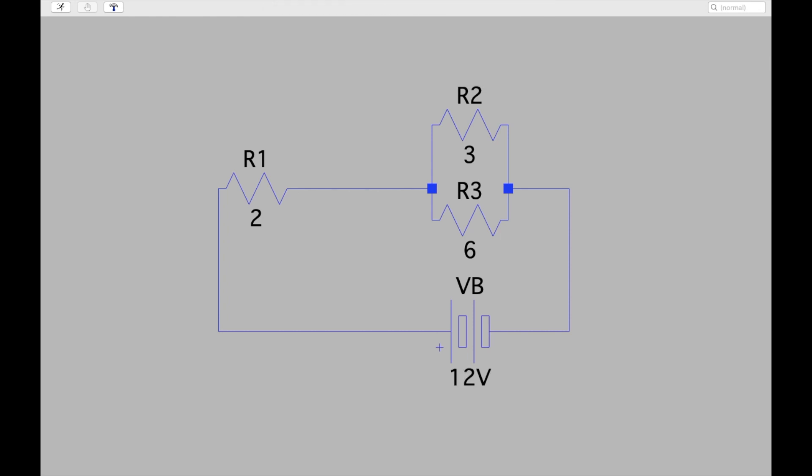For the tool to work, you also have to specify a reference point as the ground. I'm going to extend this wire a little bit. Press G to add the ground.